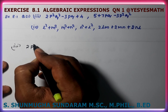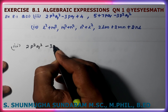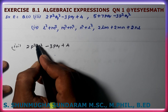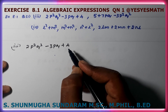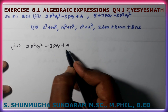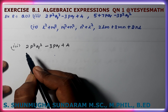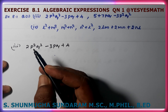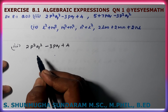Next expression: 2p squared minus 3pq plus 4. How many terms are there? 2p squared is one term, minus 3pq is one term, plus 4 is one term — that is three terms. Three terms is called a Trinomial.